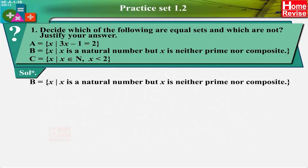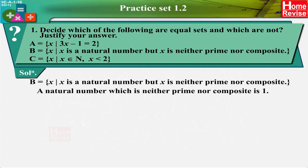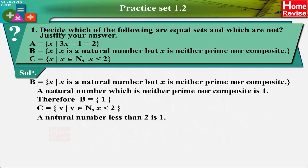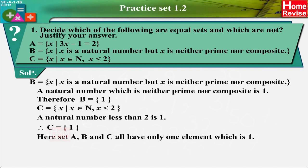For set B: a natural number which is neither prime nor composite is 1, therefore B = {1}. For set C: a natural number less than 2 is 1, therefore C = {1}. Here sets A, B, and C all have only one element, which is 1. Therefore A = B = C; A, B, and C are equal sets.